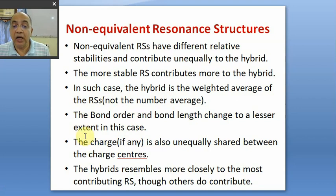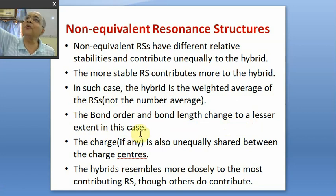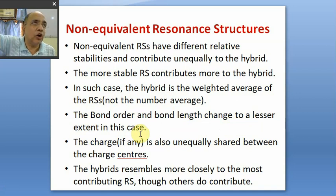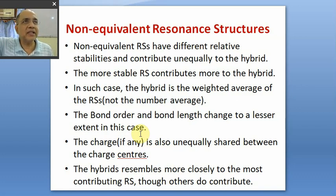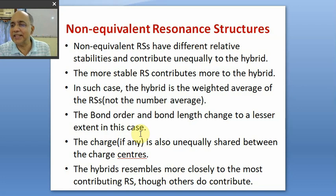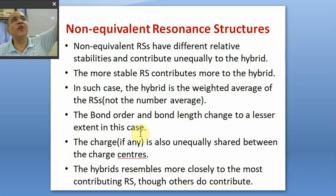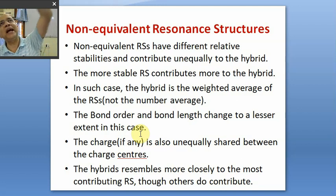In the case of non-equivalent RSS, the bond order and bond length change to a lesser extent. Although there are three or four RSS, since two have smaller contribution, the extent of delocalization is small and stability is less. Therefore in the hybrid, the change in bond order is not much. If the RS having the double bond contributes 80%, the bond order will be 1.8.